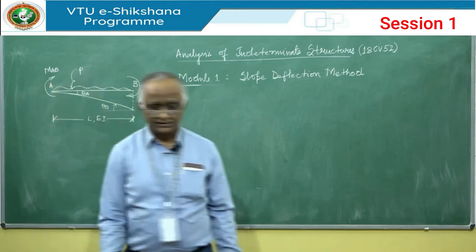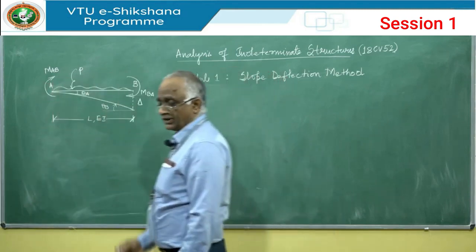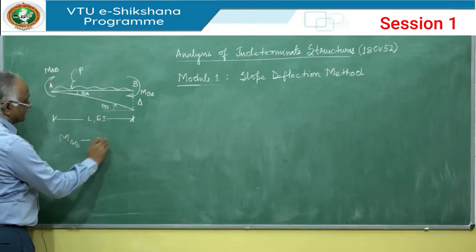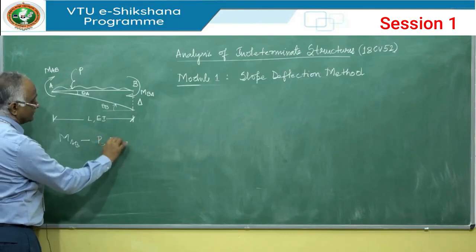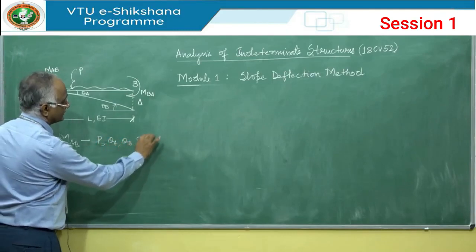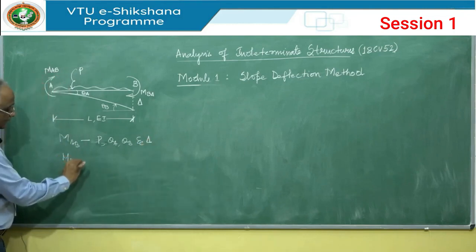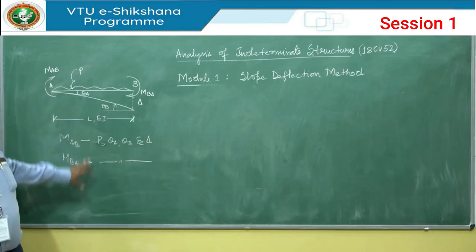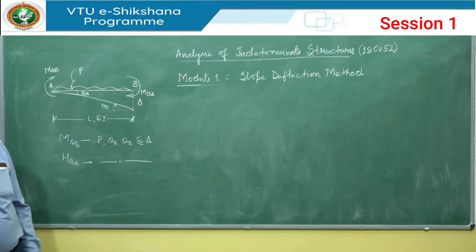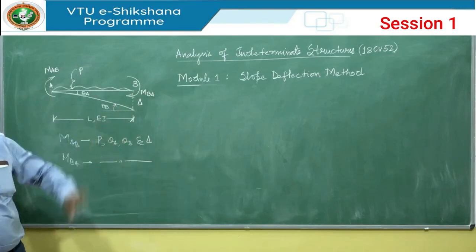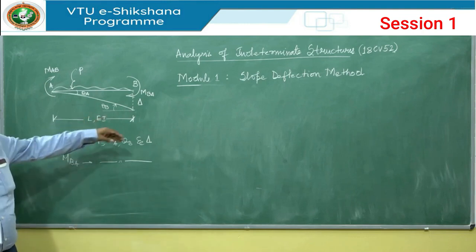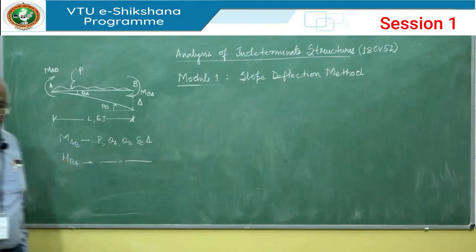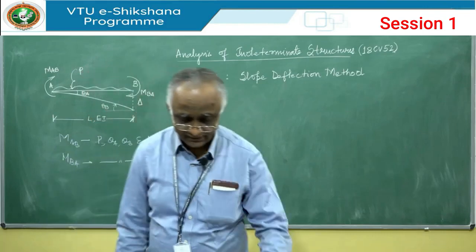This is the basic figure. The effect on M-AB will be due to theta A, applied load, theta B, and delta. Similarly, M-BA depends on all these factors. Both equations M-AB and M-BA are expressed in terms of theta A, theta B, applied load, and delta. I will consider the effect of each one by one: starting from theta A, then theta B, then delta, and finally the applied load — for which we find the fixed-end moments.